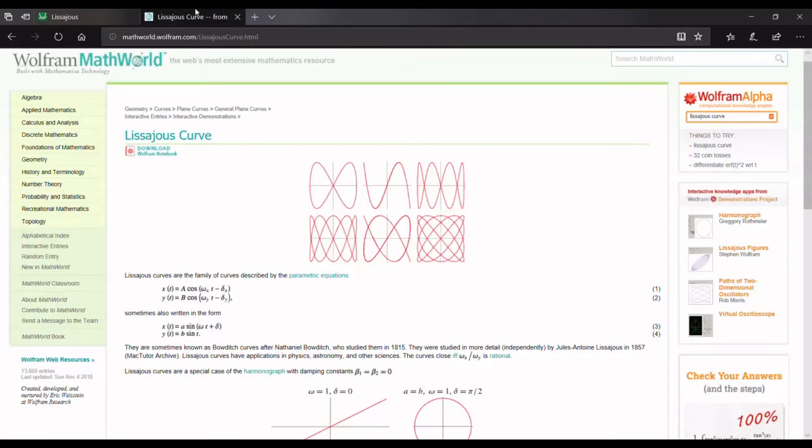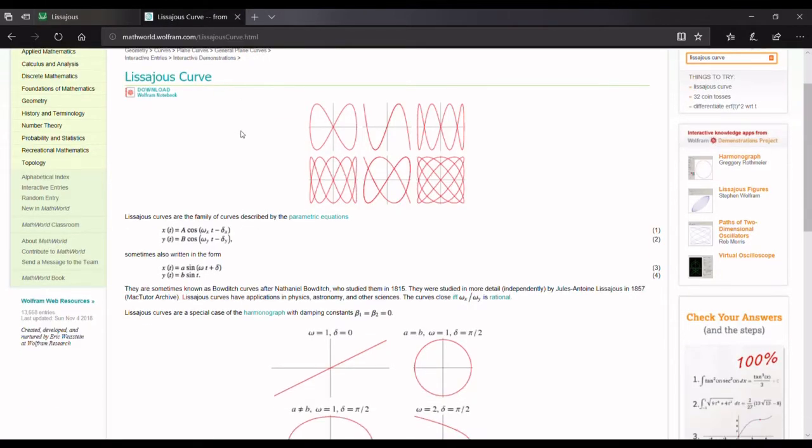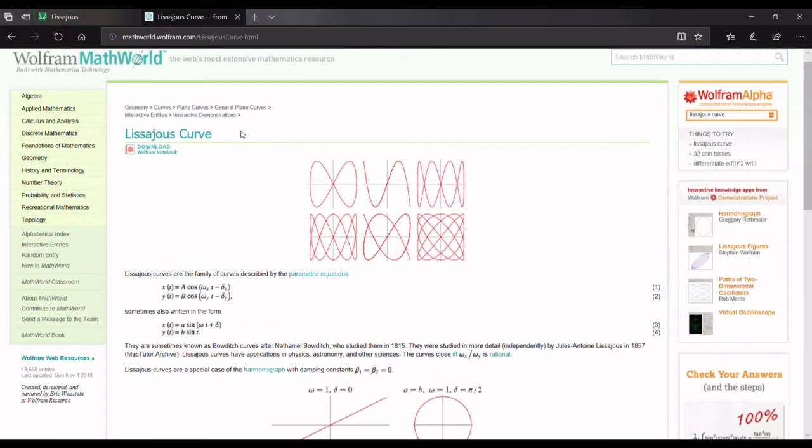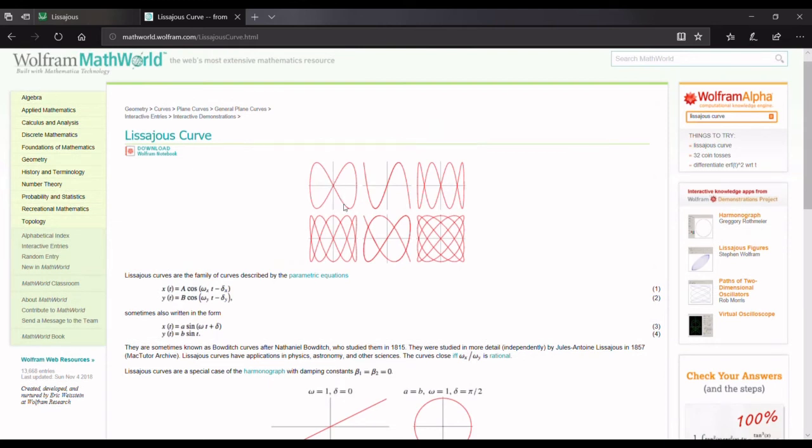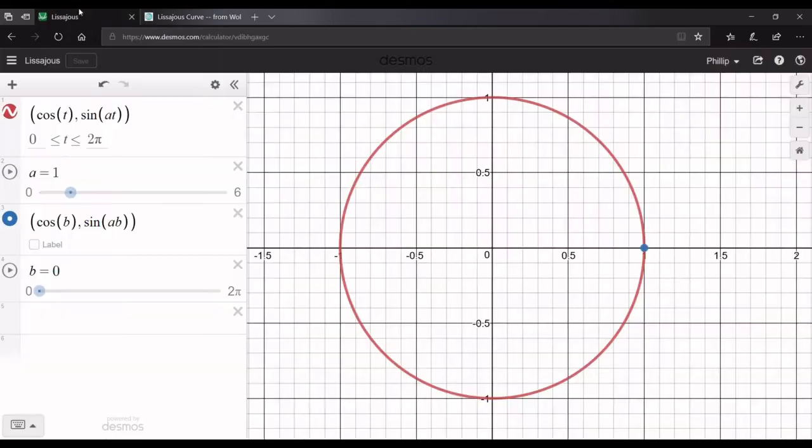Quick background on Lissajous curves. I read this from Wolfram Alpha. Basically, they're a curve where the y values and the x values oscillate, but at different periods, and they make these cool graphs, and I'll show you how to make those today.